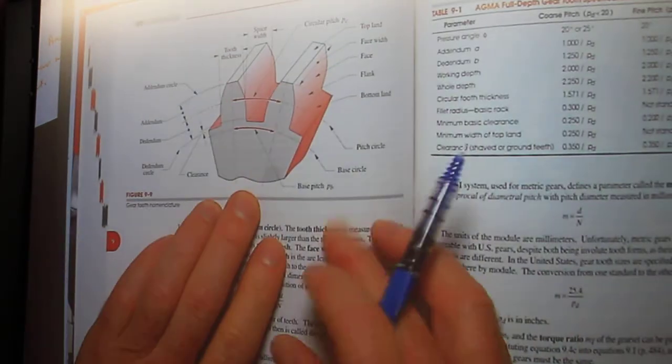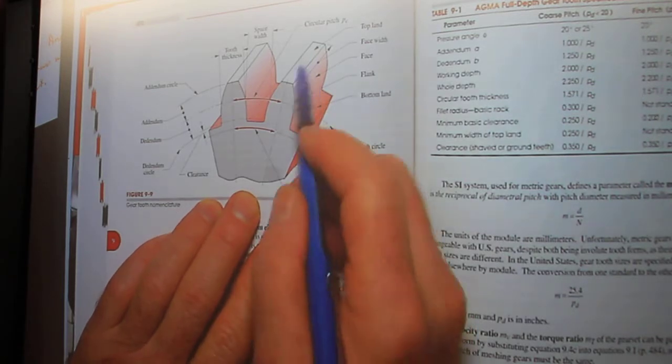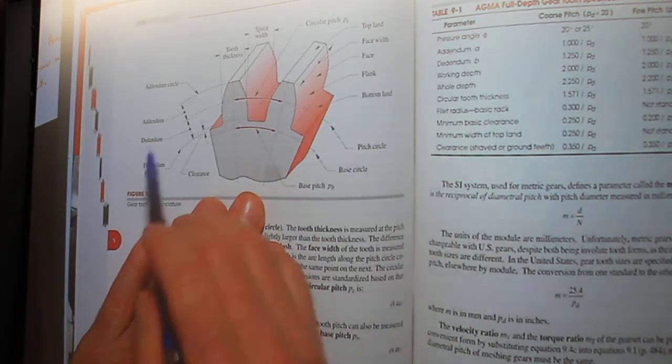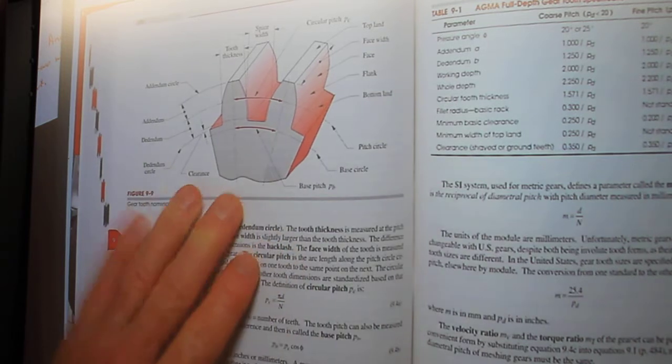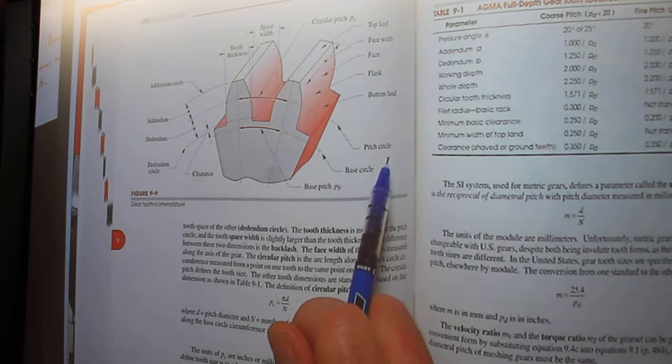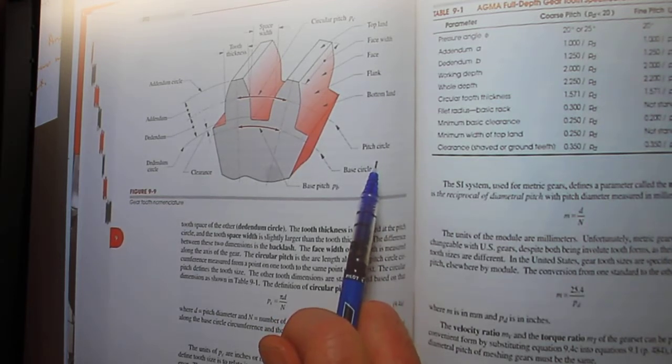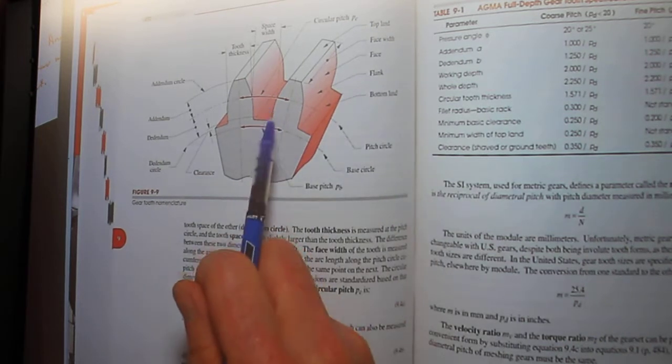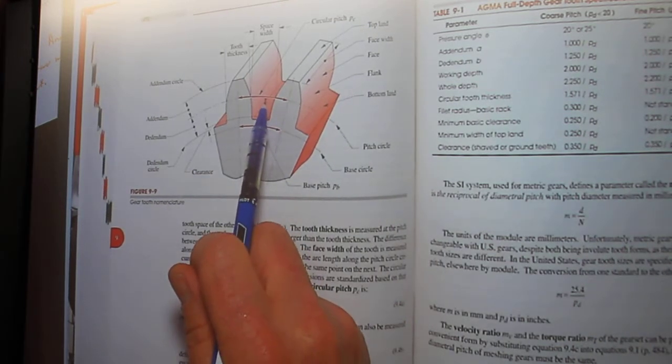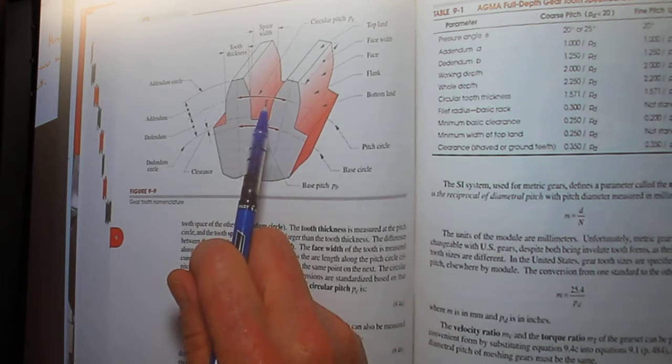The addendum and the dedendum—the key diameter that you're looking for is the pitch circle. The pitch circle is really—the pitch circle of the pinion touches the pitch circle of the gear.